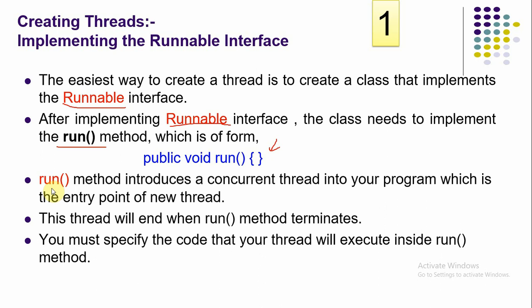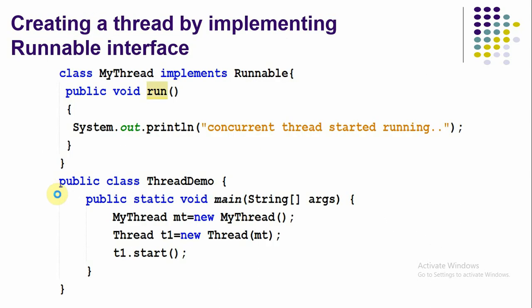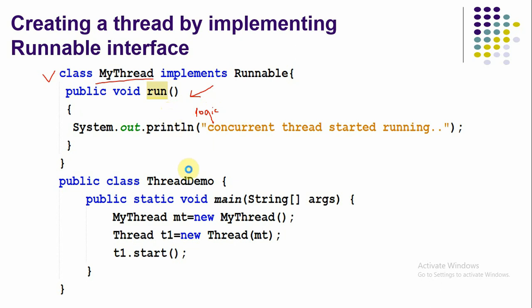When the thread is executed by the CPU, the run method will be called and executed immediately. Here is an example of how to design a multi-threaded program by implementing the Runnable interface. First, we create a class — we can give it any name — that implements Runnable. Since we implement the interface, we have to implement the run function: public void run. Inside this method we write the logic for the thread.